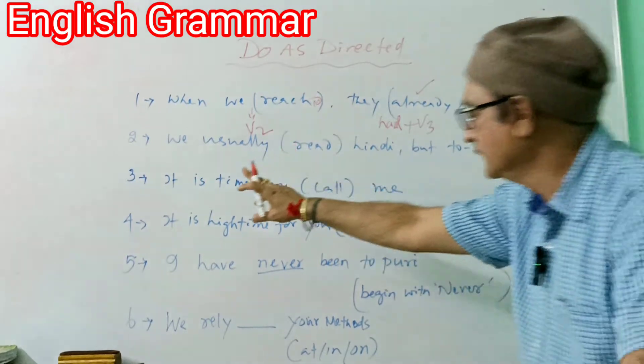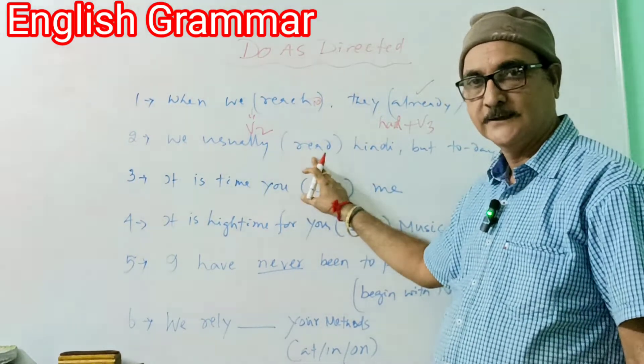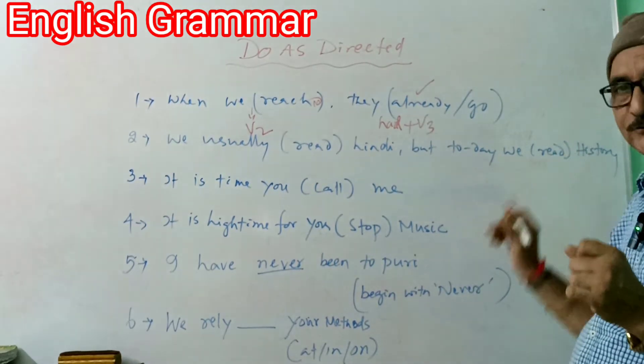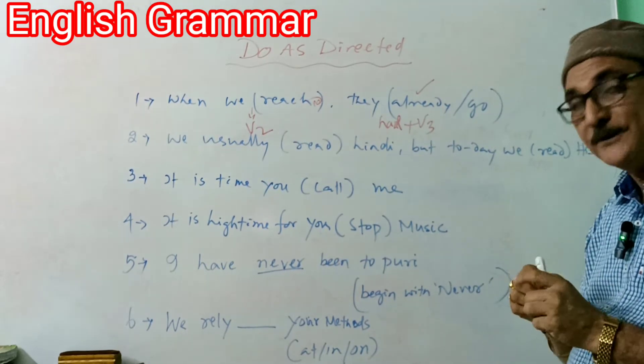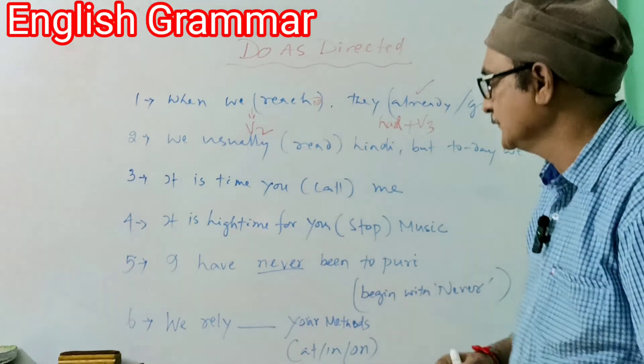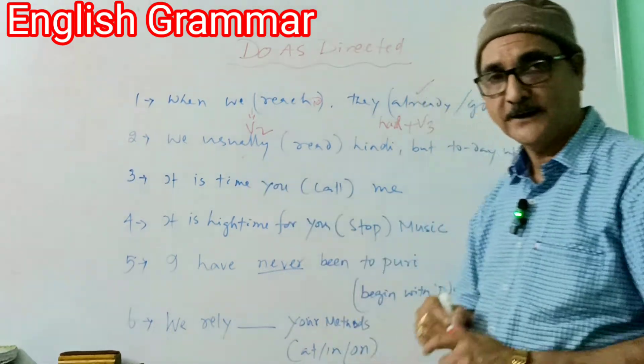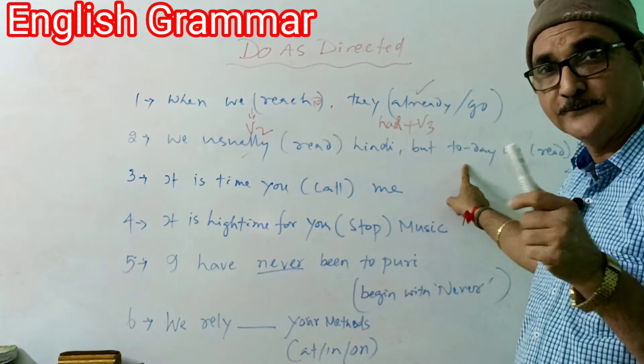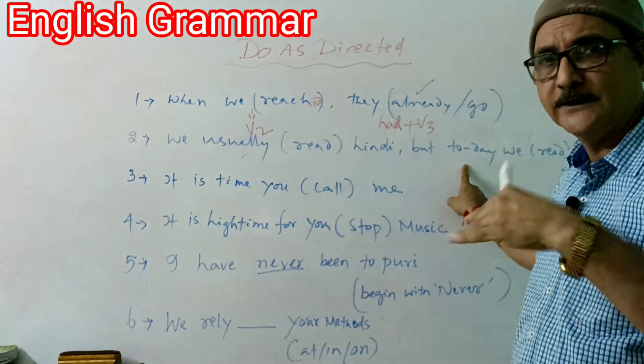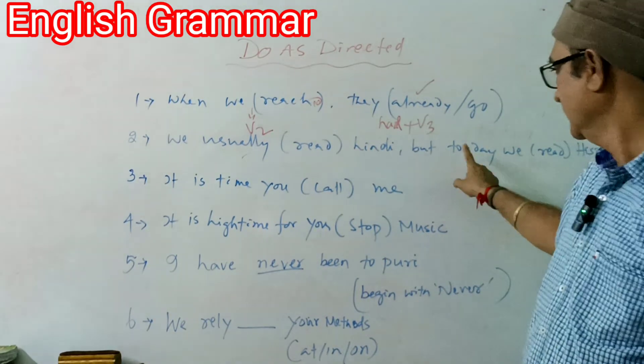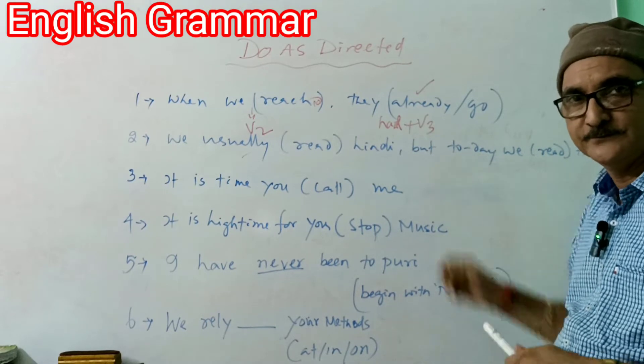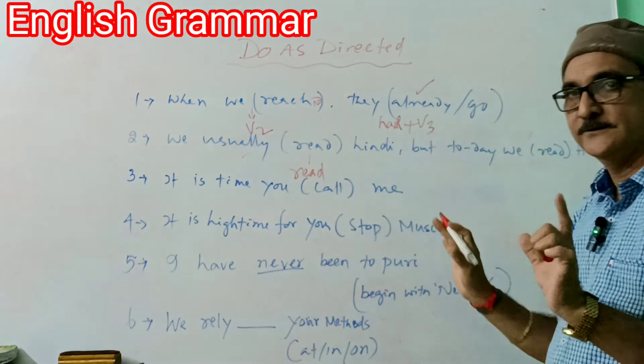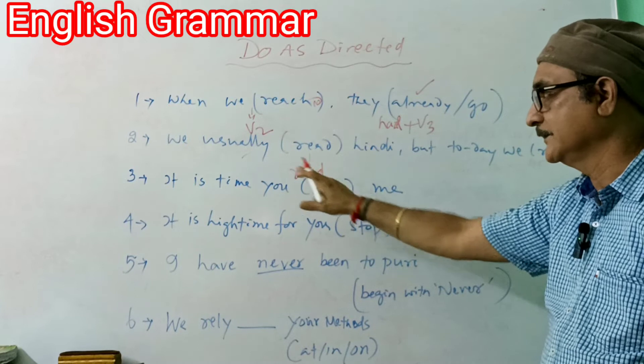Well students, now move to the second question. You see: we usually read Hindi, but today we read history. So what happens here? You know, temporary change is taking place. 'Usually' shows the regular activity, am I right? And here 'but today,' 'but today,' 'this week,' 'this month,' 'this year,' 'this season' - if it comes for time being, it will continue again, it will come to the old position. That's why this side will be progressive. Right? So this side will be just simple present: read. Read. Here there is 'we,' so you cannot use 's' or 'es.'